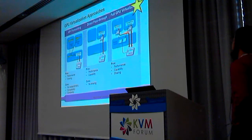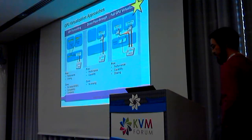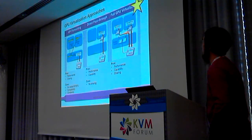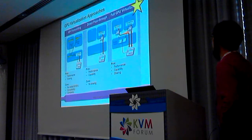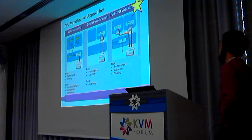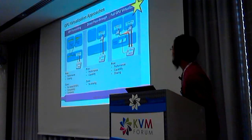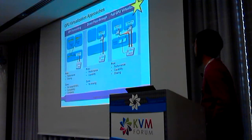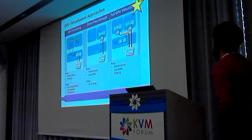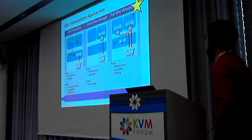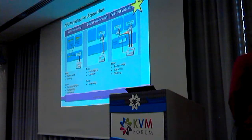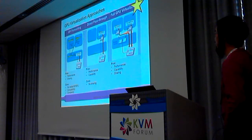The second approach is direct pass-through. In this approach, the physical GPU is passed through to a particular VM, and this VM owns the GPU exclusively. By this approach, native performance and full GPU features are available. However, there is no sharing since the GPU is owned by one single VM. The third approach, which we are talking about in this topic, achieves a good balance of performance, capability, and sharing.